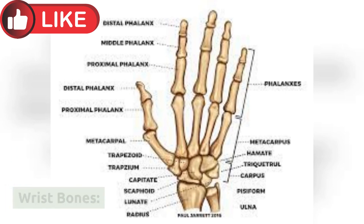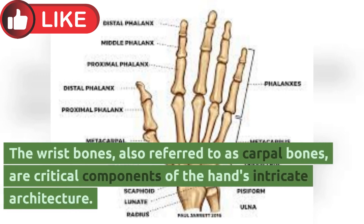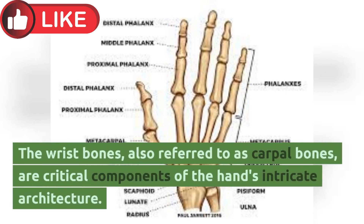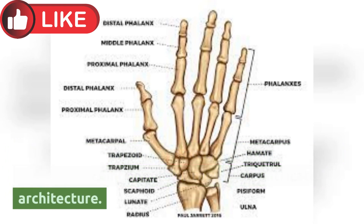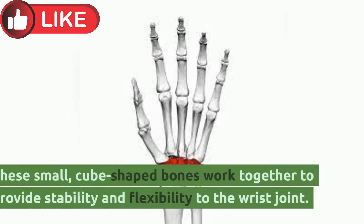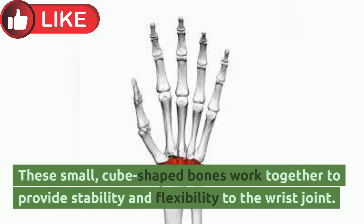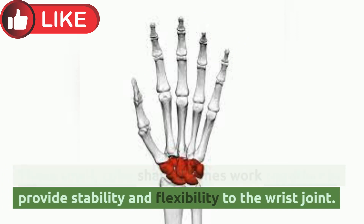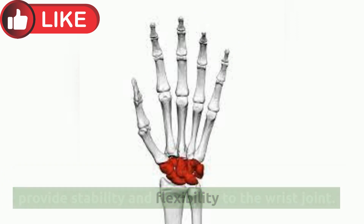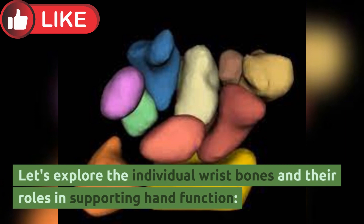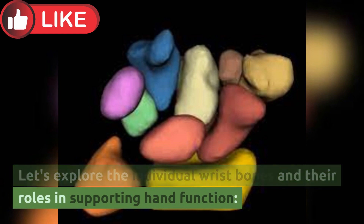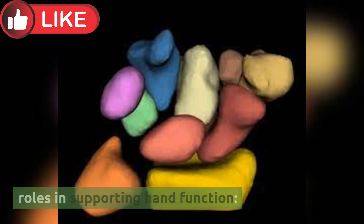The wrist bones, also referred to as carpal bones, are critical components of the hand's intricate architecture. These small, cube-shaped bones work together to provide stability and flexibility to the wrist joint. Let's explore the individual wrist bones and their roles in supporting hand function.